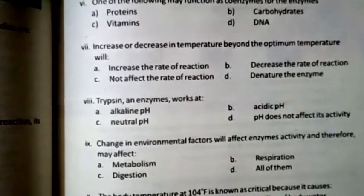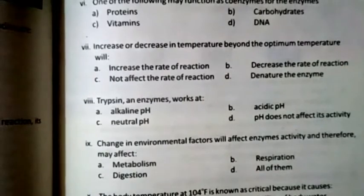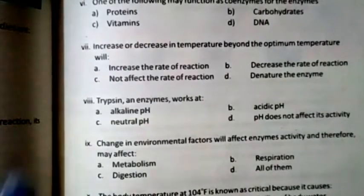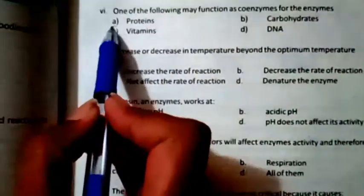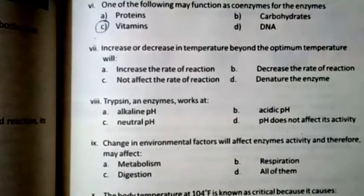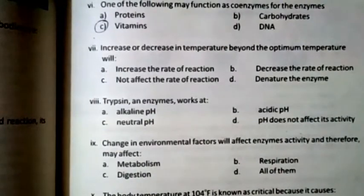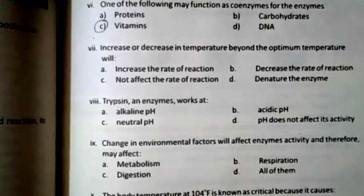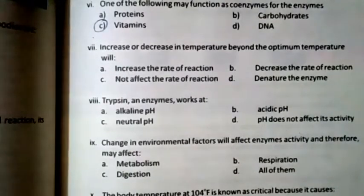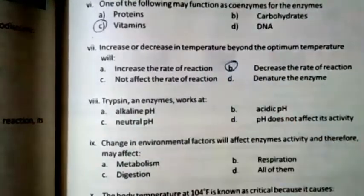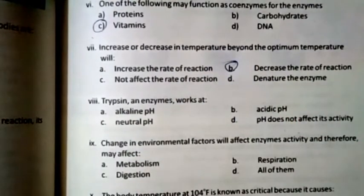Question six: Which of the following may function as a coenzyme? The right option is C — vitamins. Question seven: An increase or decrease in temperature beyond the optimum temperature will — the right option is decrease the rate of reaction.